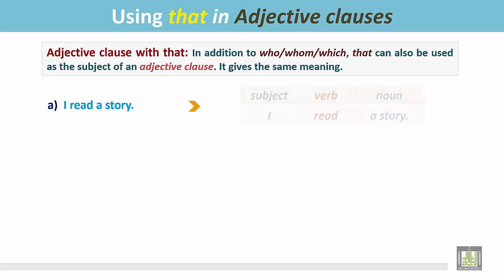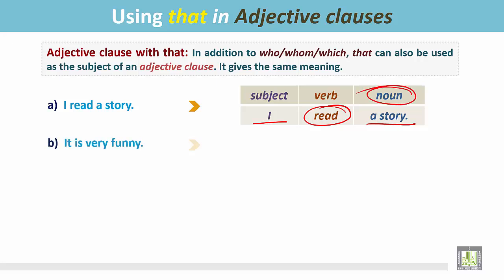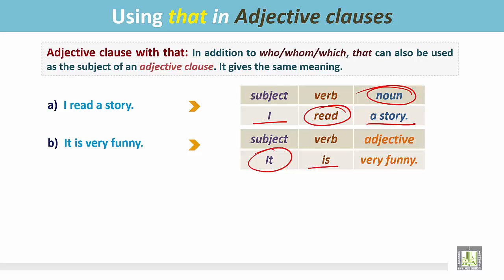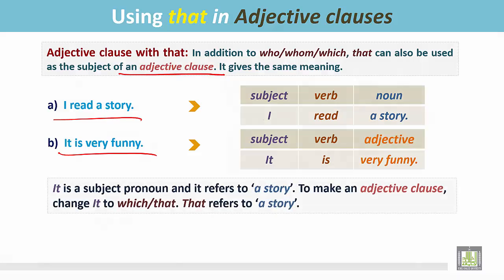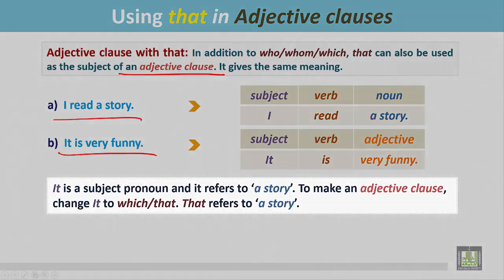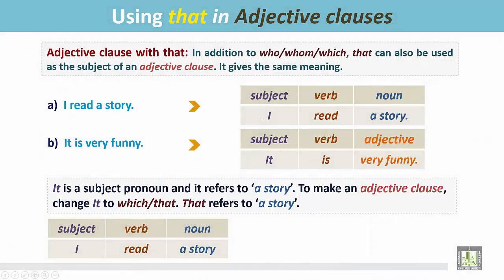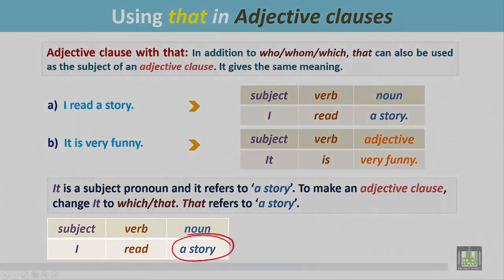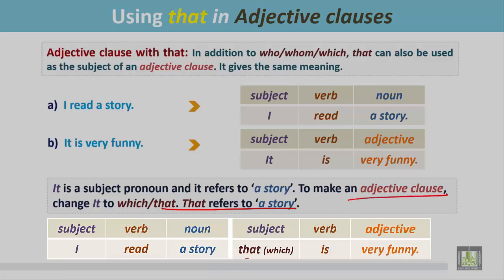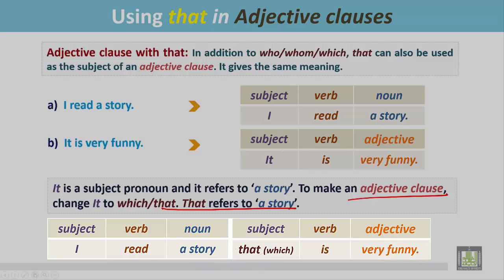I read a story. I is the subject, followed by the verb, and story is a noun. It is very funny. In this sentence, it is the subject, is the verb, and very funny is the adjective. To make an adjective clause from these two sentences, see how we join. It refers to a story. Change this 'it' to 'which' or 'that', since that refers to a story. First, write the full first sentence. Since the adjective clause modifies the noun, 'that' or 'which' begins the adjective clause. That is very funny — this is the adjective clause. It follows the noun immediately and modifies it. I read a story that is very funny.